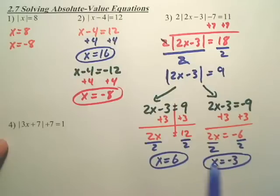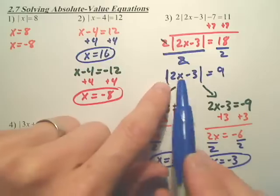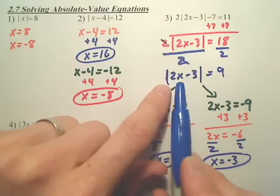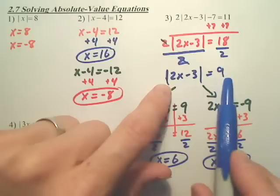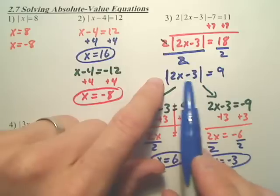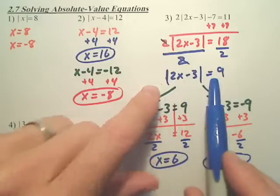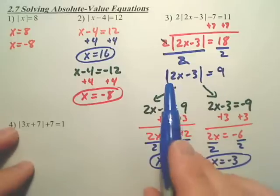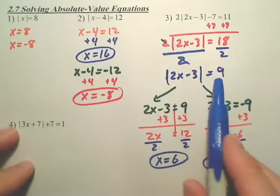Two answers. Let's look at it. Negative 3. Plug it in. What's 2 times negative 3? Negative 6. Does negative 6 minus 3 give us 9? No, doesn't that give us negative 9? But don't the absolute values change that negative 9 to a positive 9, making it a true statement? If I plug in 6, 2 times 6 is 12. 12 minus 3 is 9. Is 9 equal to 9?